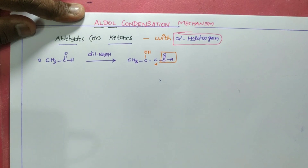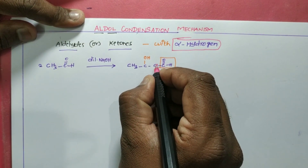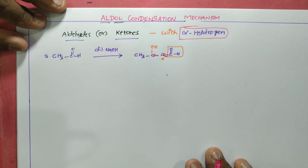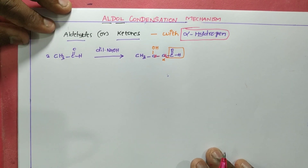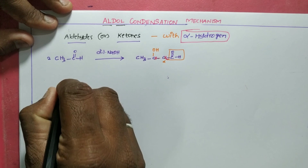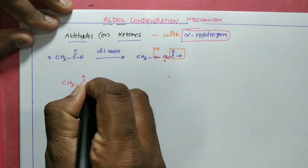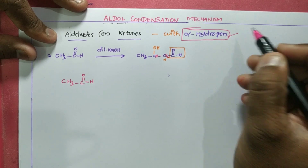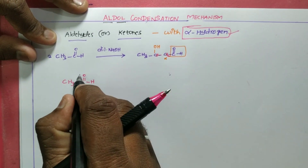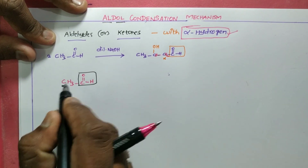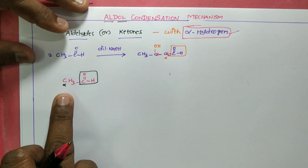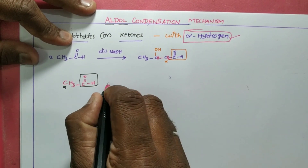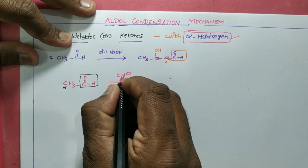Let us satisfy the conditions. The alpha hydrogen is present on the CH₃ group of acetaldehyde. The CH₃ is the alpha carbon, having three hydrogen atoms — those are the alpha hydrogens. These alpha hydrogen molecules are what allow involvement in the aldol condensation. Now, in the reaction, the molecule first reacts with OH⁻.